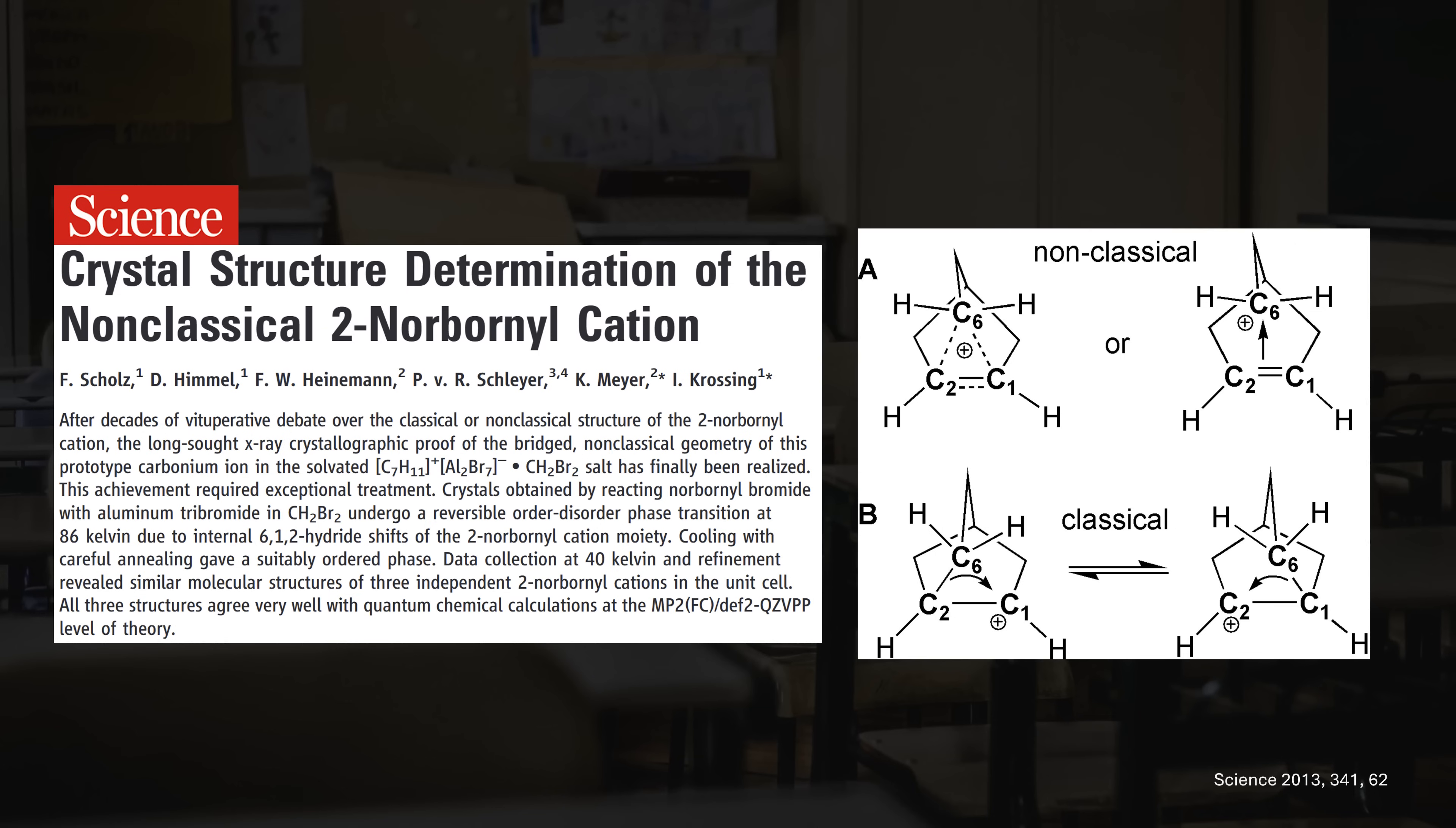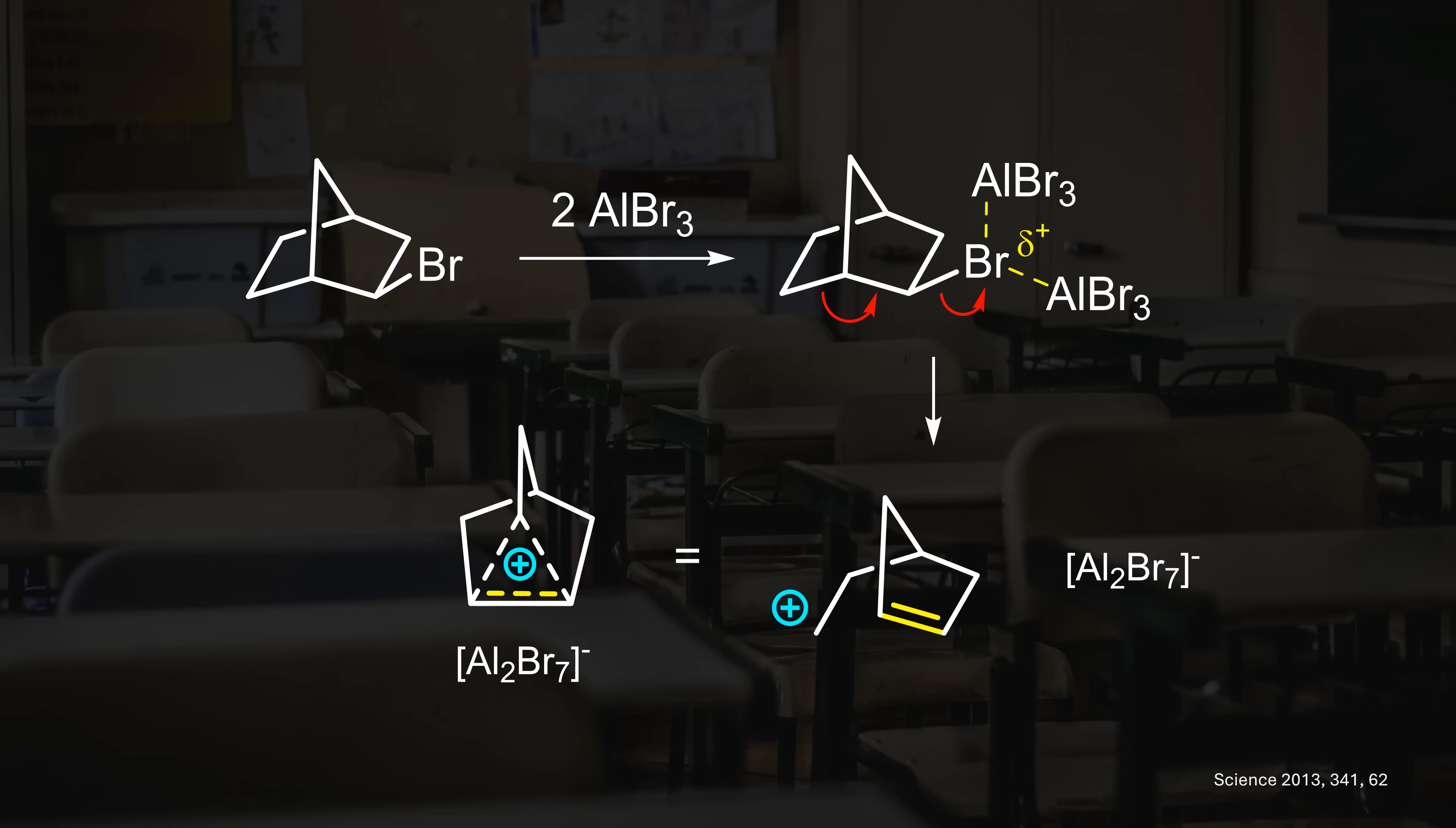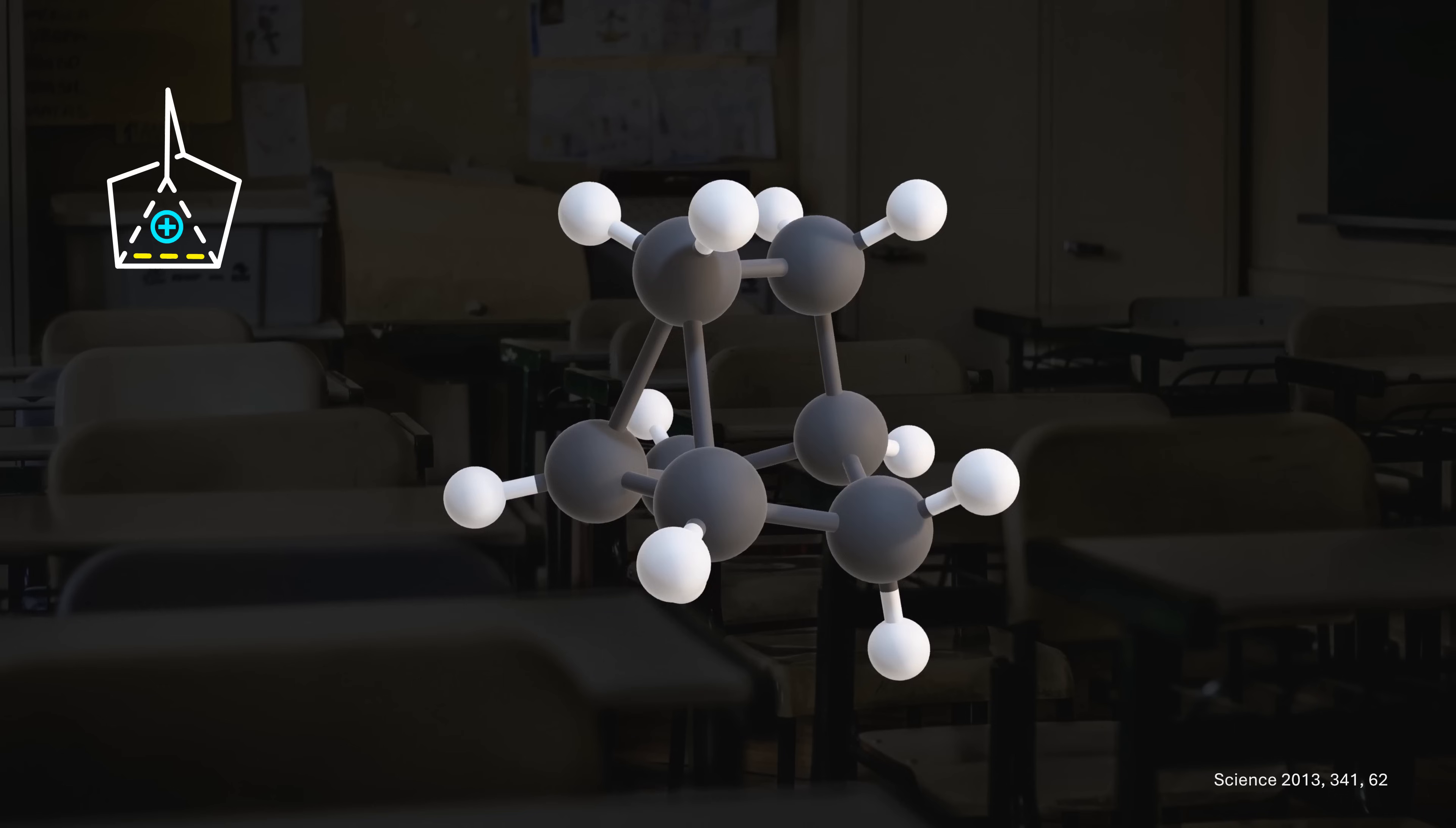One major breakthrough was in 2013, when a team of chemists finally managed to isolate the 2-norbornyl cation. It was long debated whether this was a rapidly equilibrating classical cation, or rather a non-classical, pentacoordinated carbon. The chemists cleverly used bromide abstraction from this precursor to generate the cation. The byproduct bromo-aluminate ion nicely stabilizes the species, allowing the growth of, as they put it, slightly brownish but nearly colorless crystals. These were extremely labile towards normal atmosphere and room temperature.